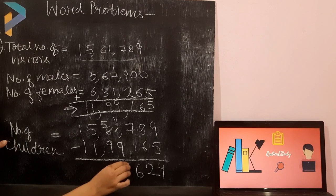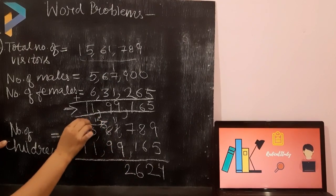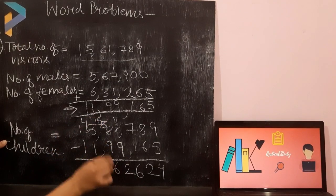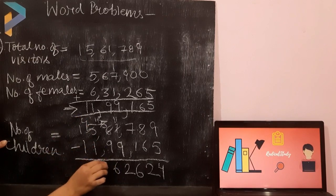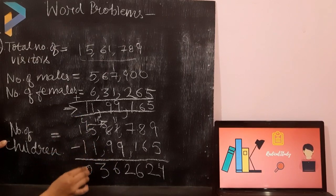11 minus 9 is 2. 5 will become 15. Again carry. 15 minus 9 is 6. 4 minus 1 is 3. 1 minus 1 is 0.